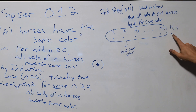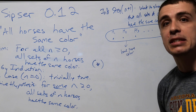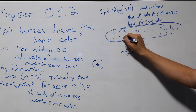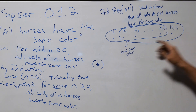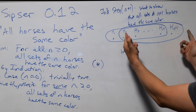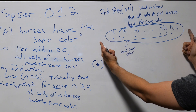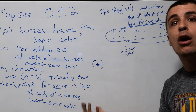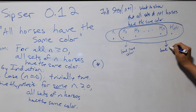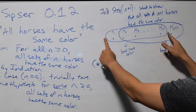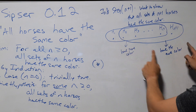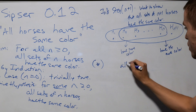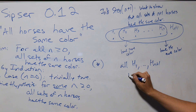Now I apply the inductive hypothesis again on a different set: I include h(n+1) and exclude h1. This is still a set of n horses, because we have n+1 in total and removed one, namely h1. By the inductive hypothesis, these also all have the same color. So we have n horses with the same color, and then we slide the window over — these n horses also have the same color. Because we have overlapping circles, all h1 through h(n+1) have the same color.